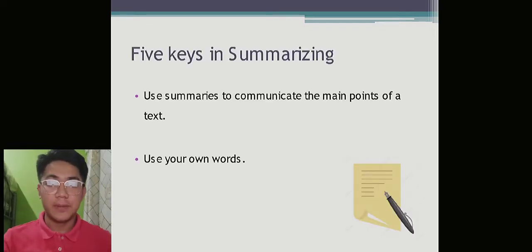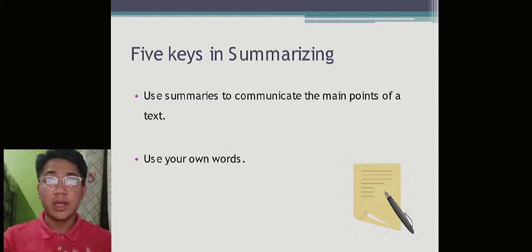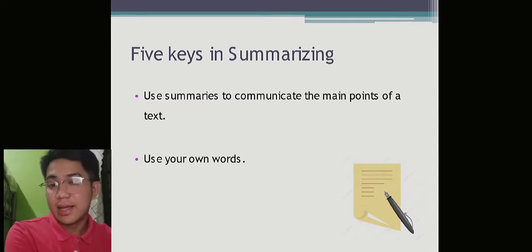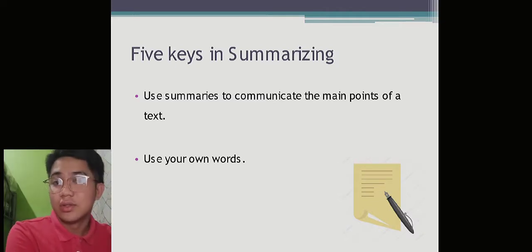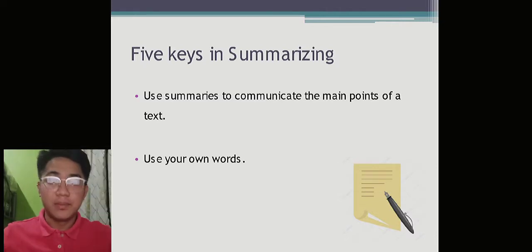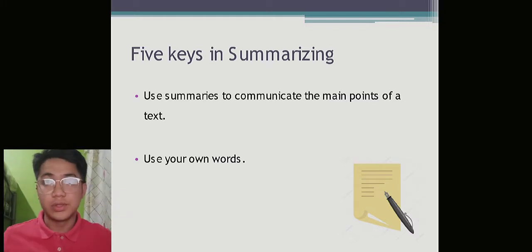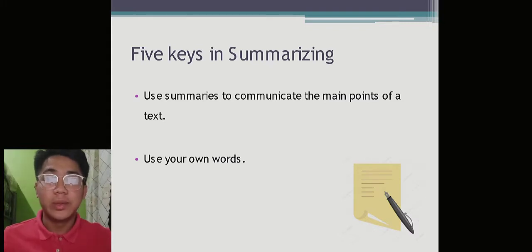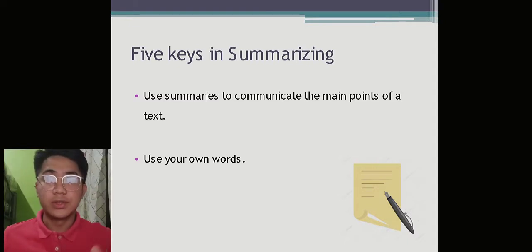Now let's move on to the different keys of summary. We have five keys in summarizing. The first one: use summaries to communicate the main points of a text — the essence of the piece of writing. Summaries are connected to communication; we relate every important part of the text in order to communicate between readers and the writer. Second: use your own words. If you are doing a copy-paste method, you're not doing a summary — you're doing plagiarism. You need to be unique.